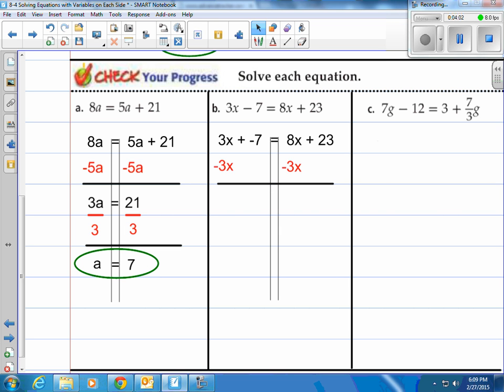Let's move, let's eliminate the smaller one, which is minusing 3x, and then 8x minus 3x. So we subtract 3x on both sides, and then we're left with negative 7 equals 5x plus 23.